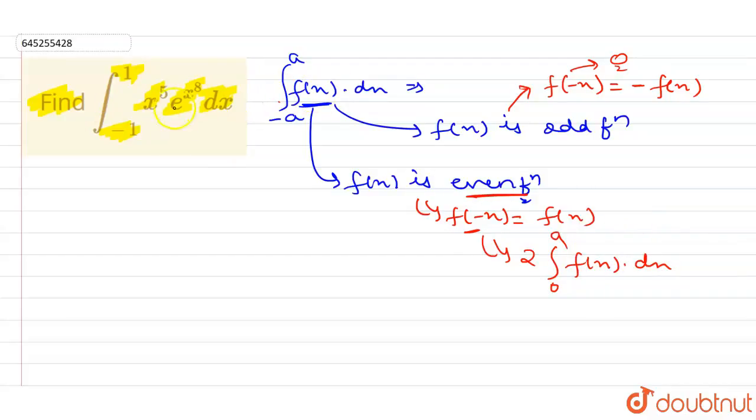So here if I compare these both, then this is the f(x). So I can write here f of x equals x power 5 into e power x power 8.